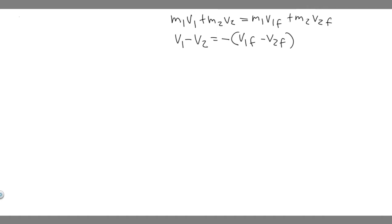Before we solve, we want to write down the given. So let's write down every single variable in the equation: M1, M2, V1, V2, V1 final, V2 final.